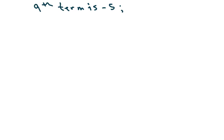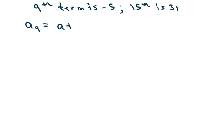And our 15th term is 31. So basically, that's going to be a sub n equals a plus 9 minus 1 times d, and that's all going to equal negative 5.